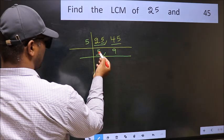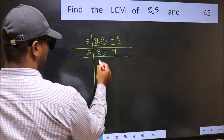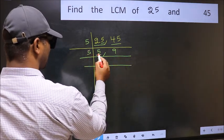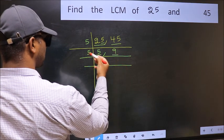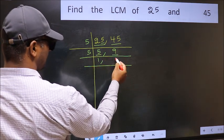Now, here we have 5. 5 is a prime number, so 5 times 1 is 5. The other number, 9, is not divisible by 5, so you write it down as it is.